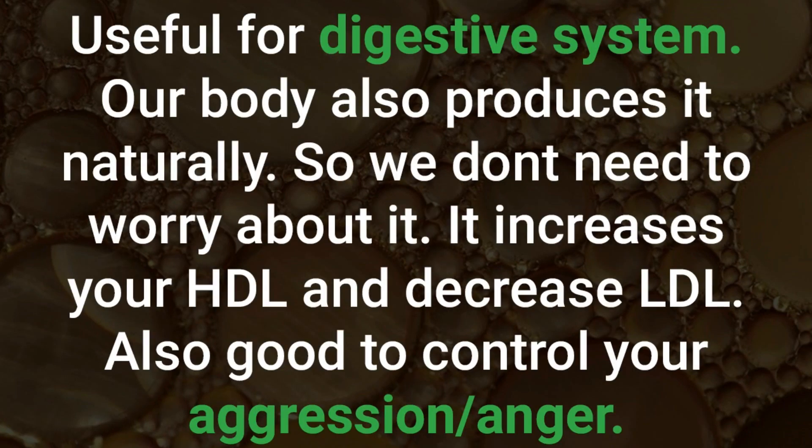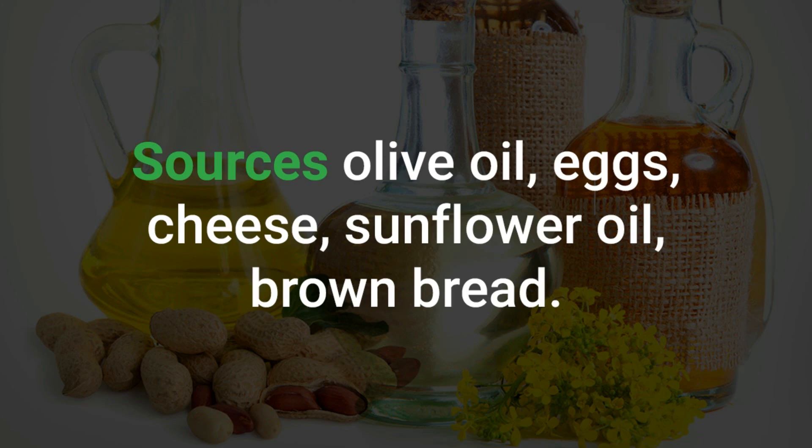Omega-9 is useful for the digestive system. Our body also produces it naturally, so we don't need to worry about it. It increases your HDL and decreases LDL. It is also good for controlling aggression and anger. Sources of omega-9 include olive oil, eggs, cheese, sunflower oil, and brown bread.